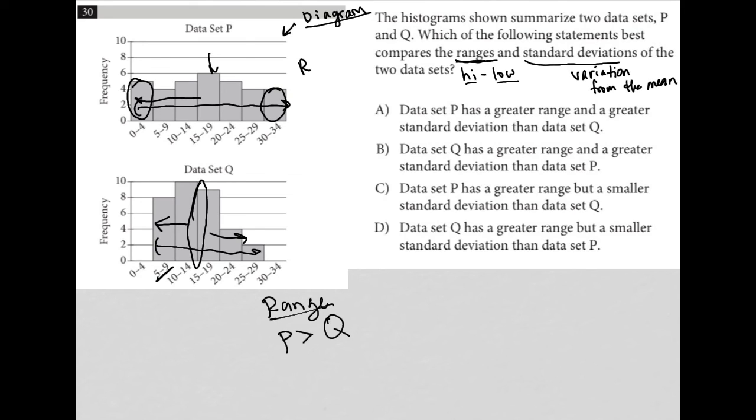So in terms of the standard deviation, I'm going to say that P is also greater than Q. Now let's just see which answer choice matches that. Choice A: data set P has a greater range - yes - and a greater standard deviation - yes, I like choice A. Really, there's no need to look at the other answers because there's nothing else that could be better than that. So choice A for me is the best answer.